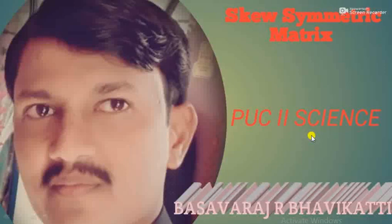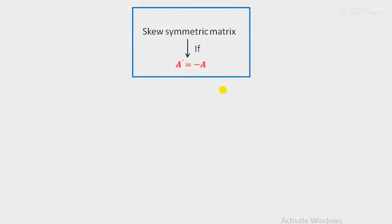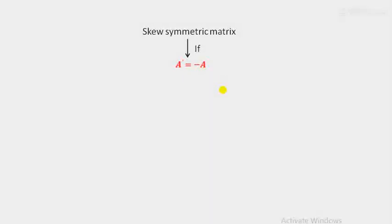Today's topic is skew symmetric matrix. What is the definition of this skew symmetric matrix? A square matrix is said to be skew symmetric if A' equals minus A. To understand the definition of this skew symmetric matrix, we are about to consider some examples.